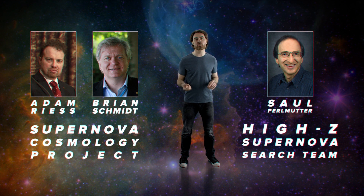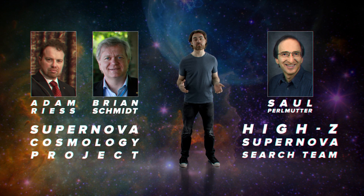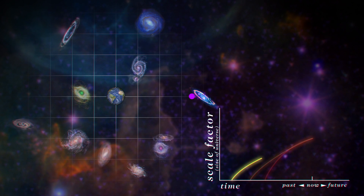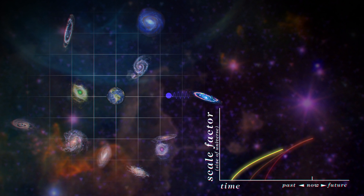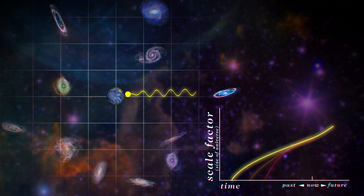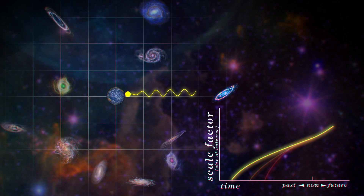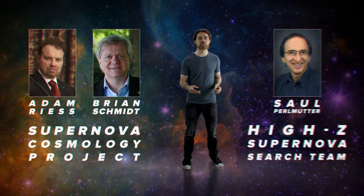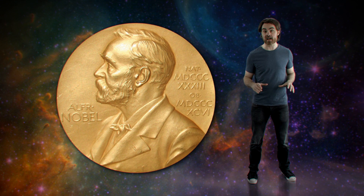They thought this would tell them whether the universe would expand forever or re-collapse. But what did they see? In 1998, both teams announced that the universe was expanding even slower in the past than it is now. The redshifts were way too low — or conversely, the supernovae were fainter than you'd expect, even for a universe that has no matter in it at all. That means the expansion rate of the universe has actually sped up, accelerated, while that supernova light was traveling to us. This discovery of the accelerating expansion of the universe earned both teams the Nobel Prize in 2011, and it's considered to be the discovery of dark energy.